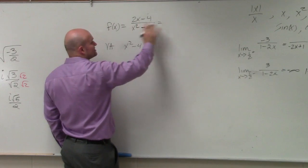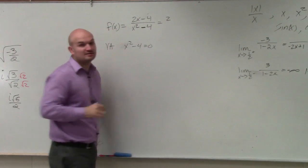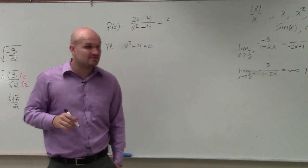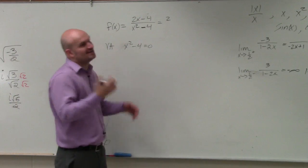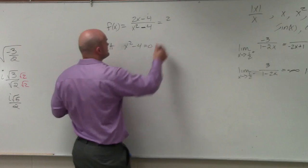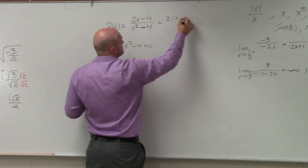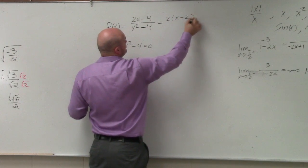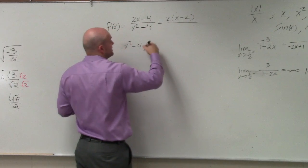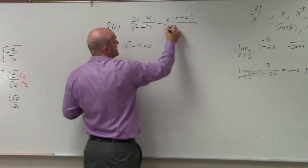However, we should always simplify this to make sure that none of our discontinuities are holes, correct? So even though I say yes, set it equal to 0 to find your vertical asymptotes, we should always check to make sure that we don't have any of these discontinuities or holes, which in this case looks like we are going to have some.